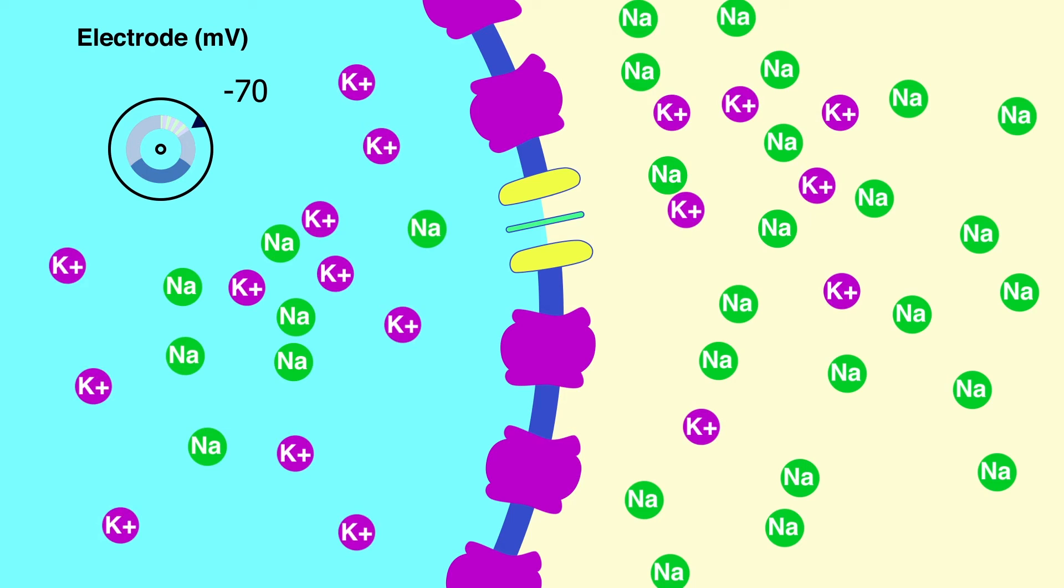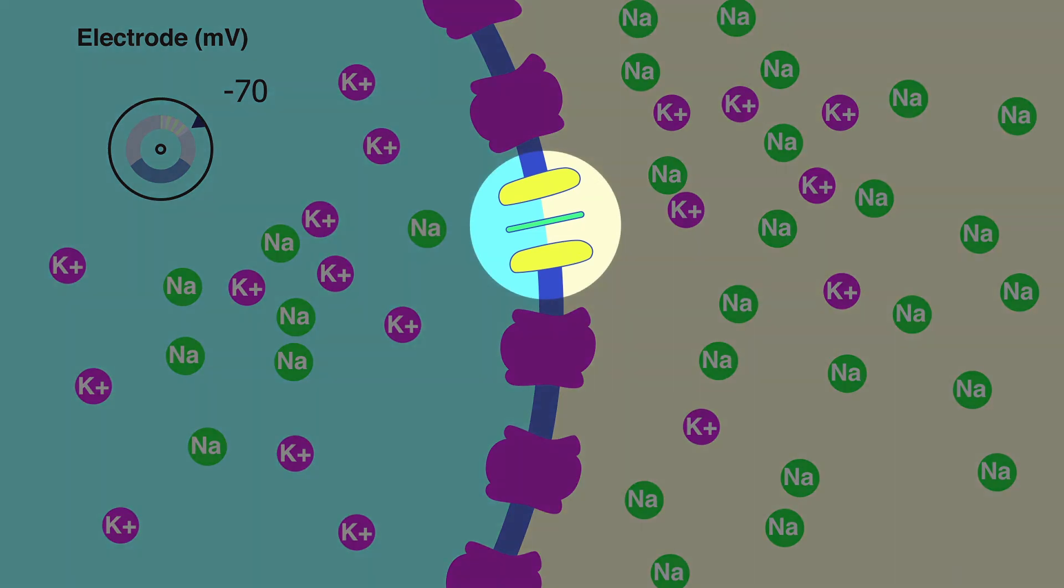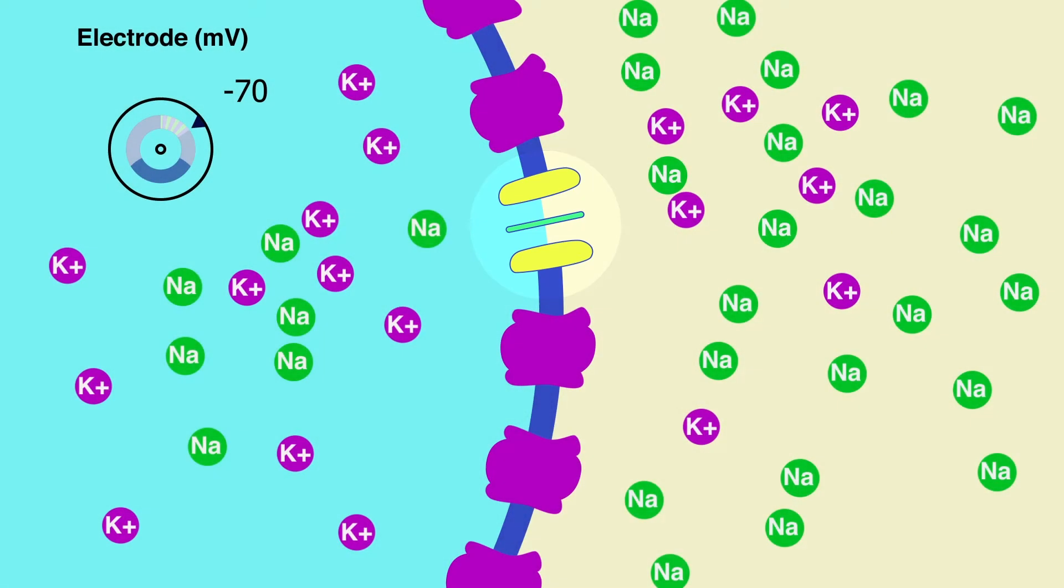There are multiple physiologic processes that help create this electrical potential, but the main one is the sodium-potassium pump. These ATP-powered pumps move potassium inside the cell and sodium outside the cell to maintain the resting membrane potential.